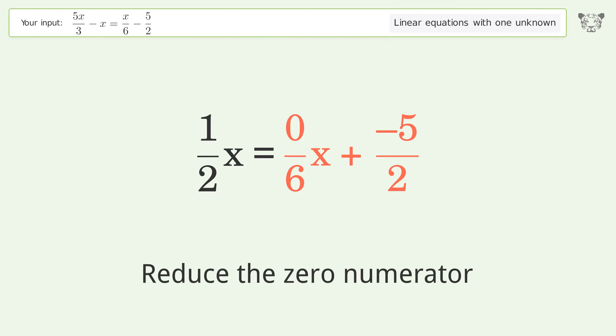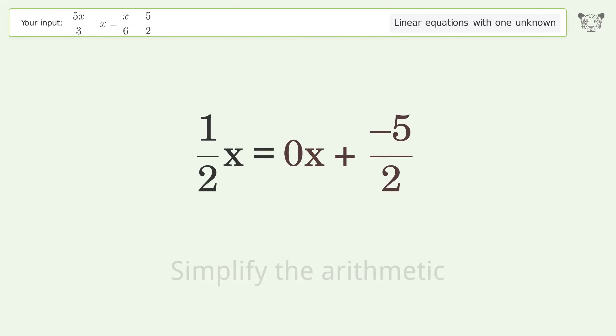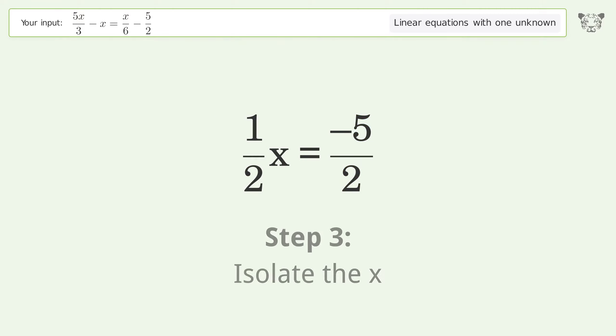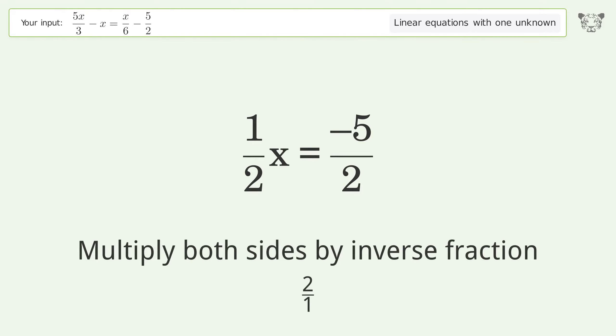Reduce the zero numerator. Simplify the arithmetic. Isolate the x. Multiply both sides by inverse fraction 2 over 1.